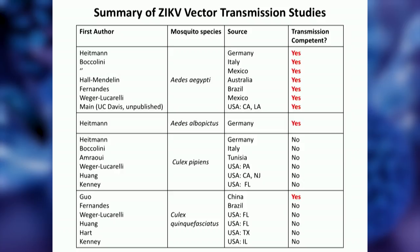Looking at the Culex data, almost uniformly, not a single mosquito tested — and unlike invertebrate studies, we have large cohort sizes often of 50 or 100 — out of thousands of Culex tested from around the world, they are not transmission competent. There is one outlier study which could be interesting: barring any methodological issues, this could indicate something different about Chinese Culex quinquefasciatus mosquitoes enabling Zika transmission, or something different about the Zika strain used — an Asian lineage genotype virus, the same circulating in the Americas, from a traveler returning to China.